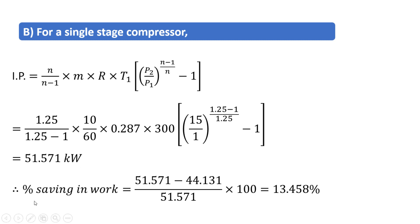The percentage saving in work equals (larger value − smaller value) / larger value × 100. That is (51.571 − 44.631) / 51.571 × 100, giving a 13.458% reduction in work. This saving makes multi-stage compression profitable.